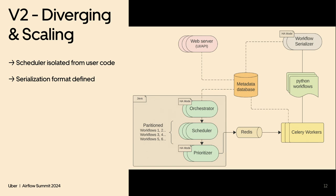The scheduler is responsible for creating runs based on dependencies — whether upstream and downstream tasks are met — and creates a task instance run. The prioritizer checks if Celery workers have capacity left and what the pool usage is, then puts tasks into the Redis queue. The rest of the architecture is similar to standard Airflow.